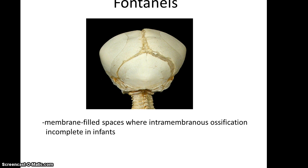In an infant, you would not see these sutures. Instead, you would see areas that are still cartilage because infants are born while their skulls are not fully developed — still a little soft. This helps in the birthing process. These areas where there is yet to be some intramembranous ossification are called fontanelles.